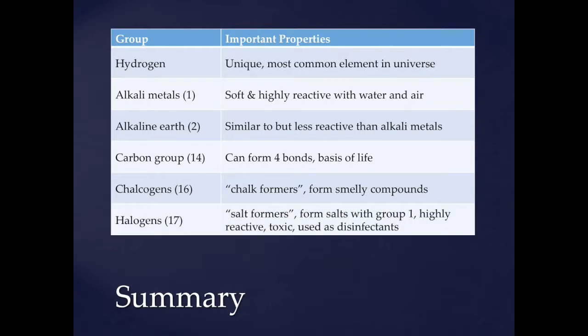Group 17 are the halogens — these are your salt formers. They form salts with group one. They're highly reactive, almost as highly reactive as the alkali metals. They're highly toxic, and they're used as disinfectants because of that toxicity. Chlorine in its natural gas form is very dangerous, but you dilute it down and you get something that cleans pools. Iodine in pure form can be very dangerous, but can be used to clean cuts when it's in a solution.